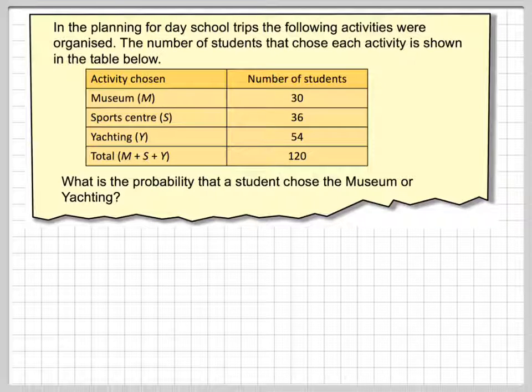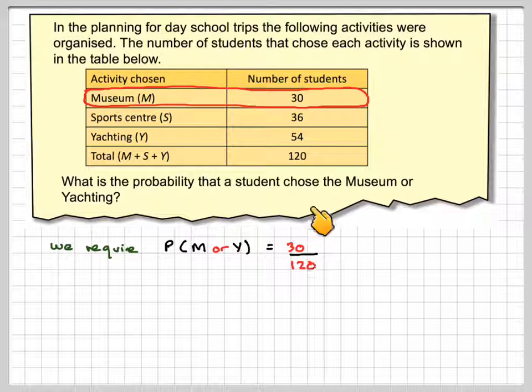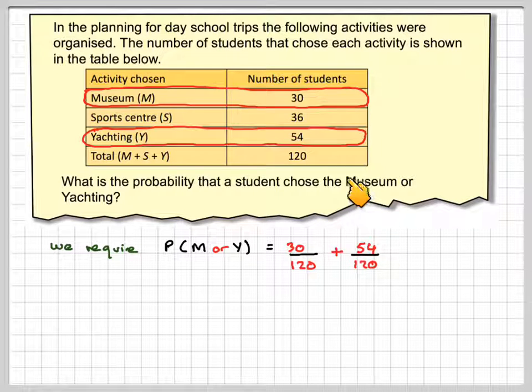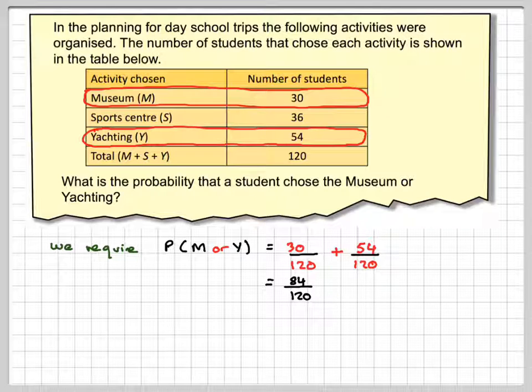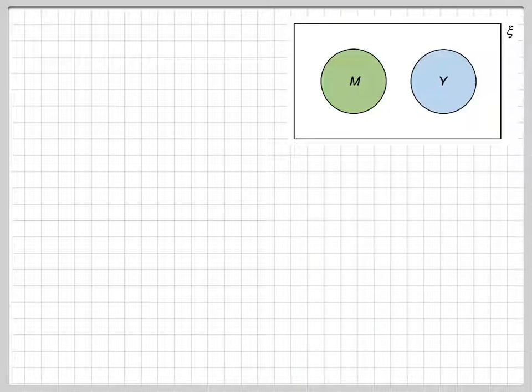We require the probability of M or Y. That's going to be 30 out of 120 plus 54 out of 120, so that's 84 out of 120, which is 7 out of 10. Now we can look at this using a Venn diagram.